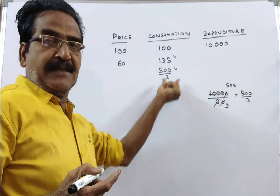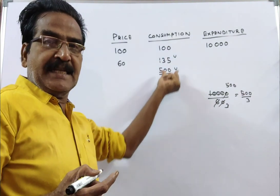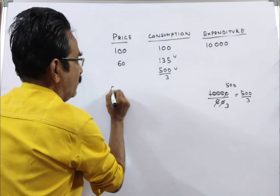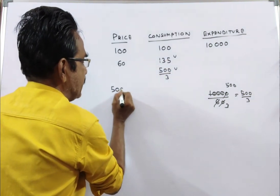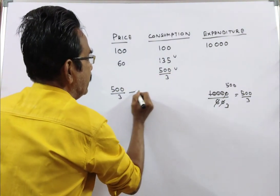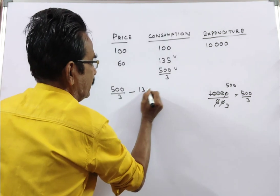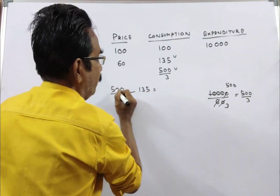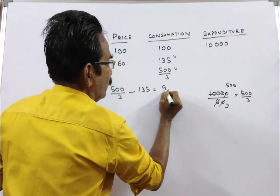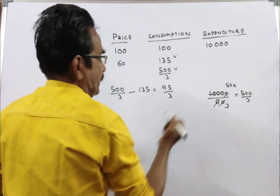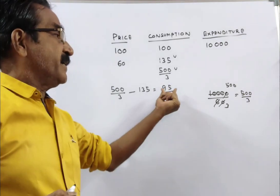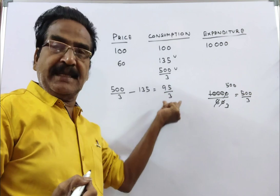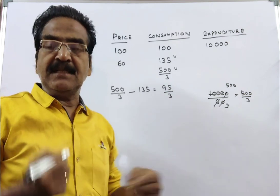So he can increase the consumption. What is the increase? 500 by 3 minus 135. This is equal to — 500 minus 405 is 95 — so 95 by 3. He can increase the consumption by 95 by 3 units.